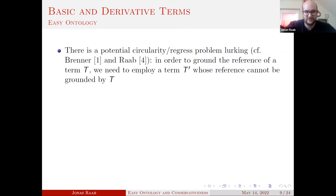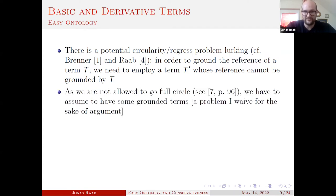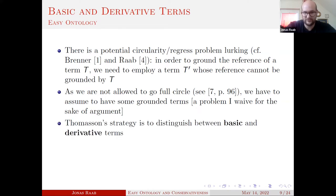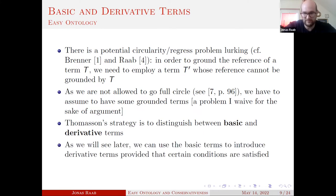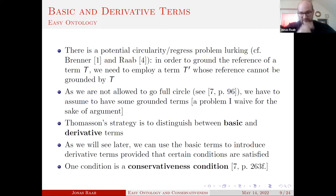Regarding the application conditions themselves, the main motivation is to circumvent what is called the 'qua problem' — a problem of indeterminate reference that targets causal theories of reference. To circumvent this, Thomasin says nominative terms must be associated with a sortal or categorical concept, which grounds reference and gives us application conditions that are supposed to be conceptually true. There is also a circularity concern: you can only explicate application conditions by reference to what you need to infer as existing. Thomasin addresses this by distinguishing terms into basic and derivative terms, where a conservativeness condition is placed on term introduction.